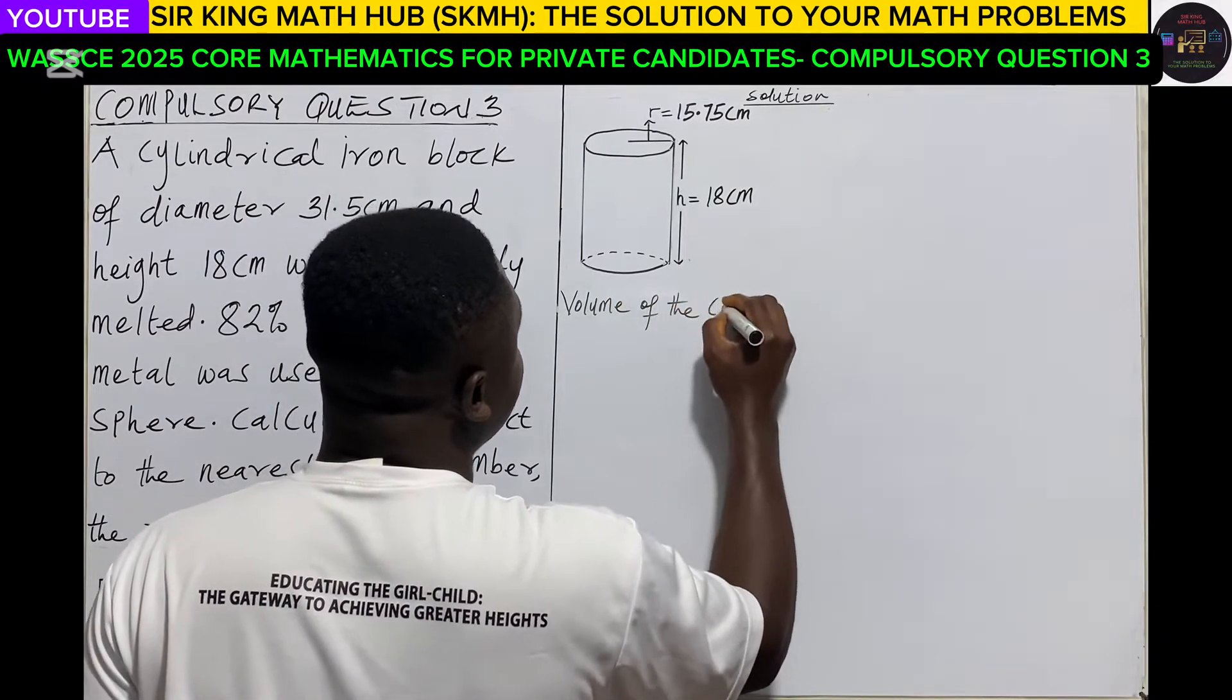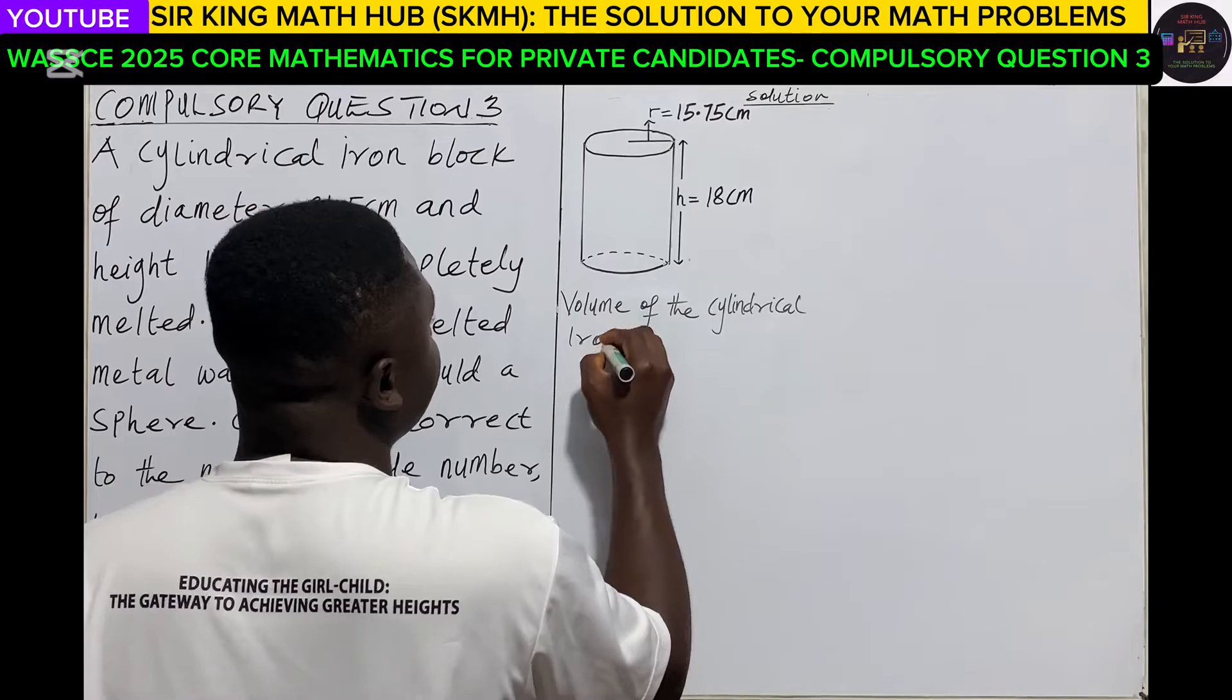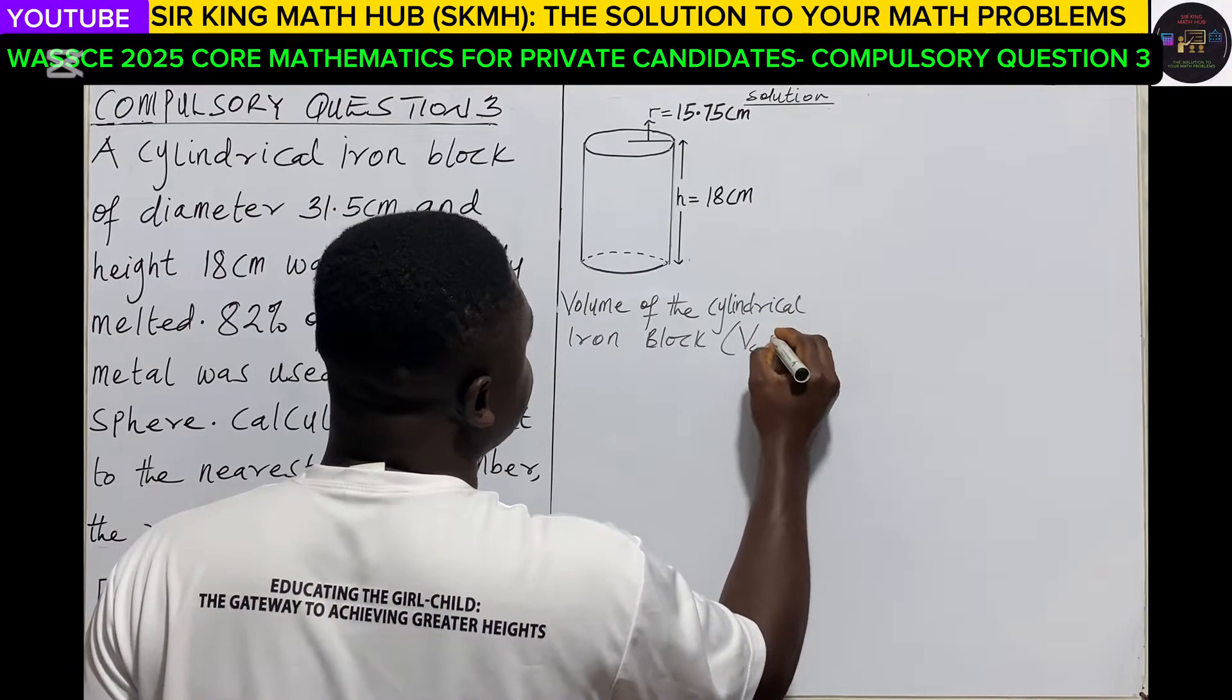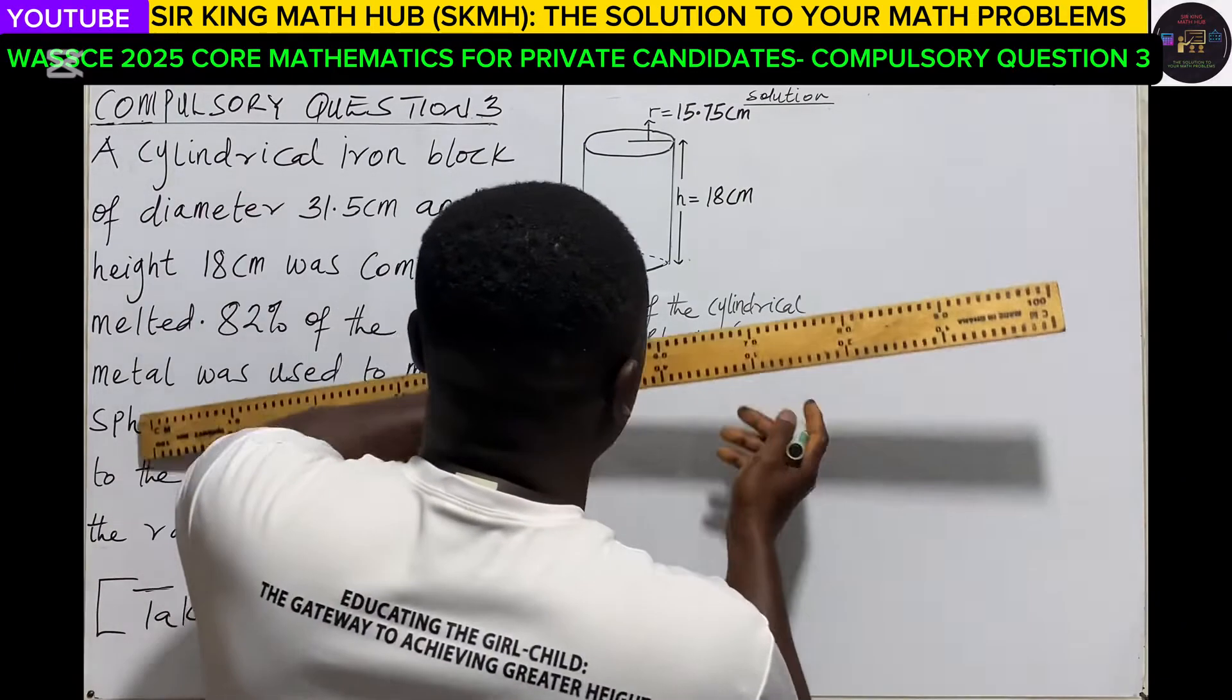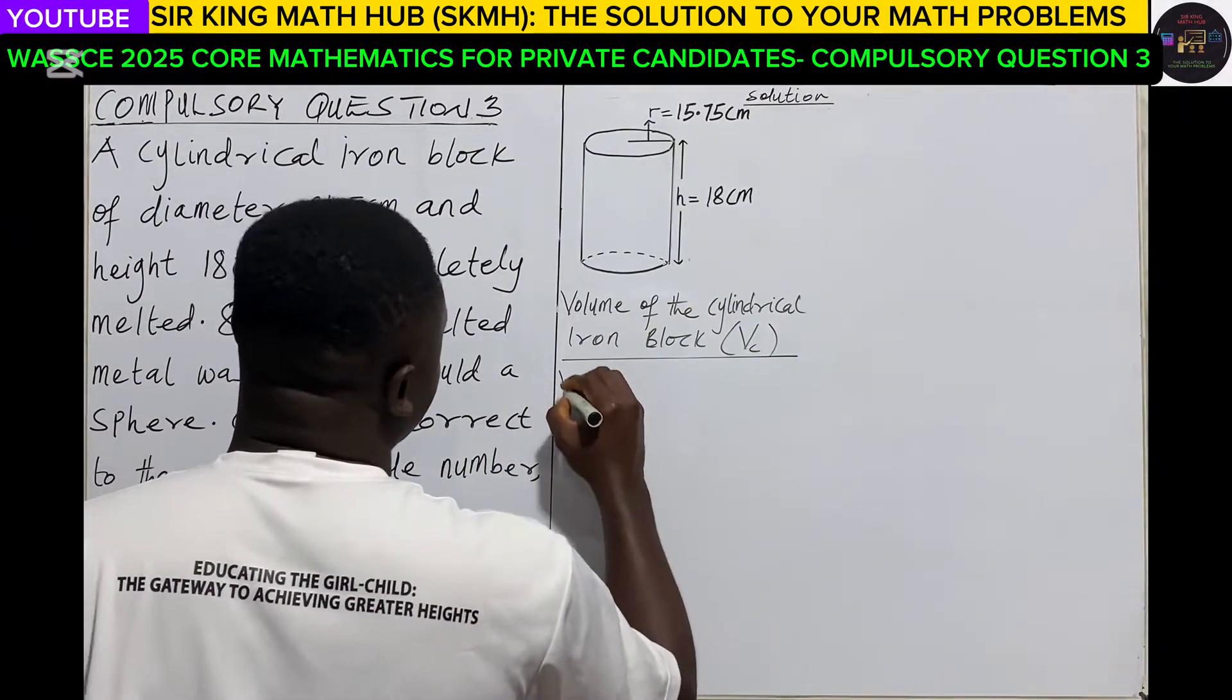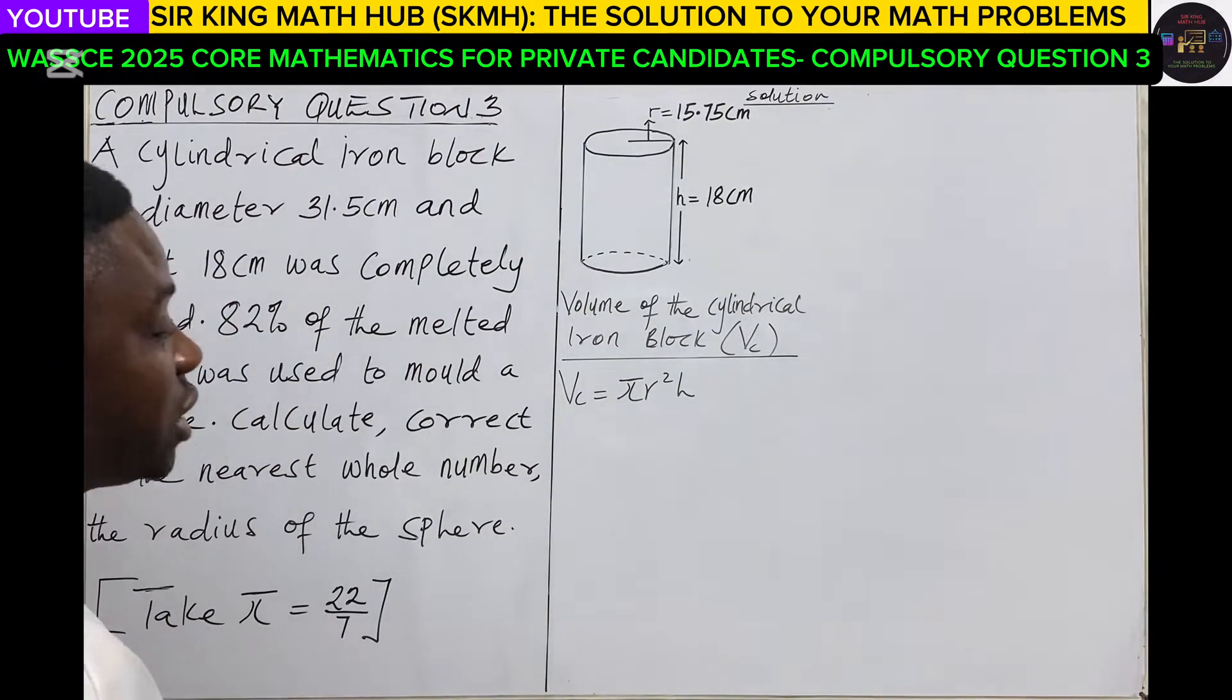So the volume of the cylindrical iron block is represented as V subscript C. What is the formula for calculating the volume of a cylinder? Remember that the volume of a cylinder is given as πr²h.